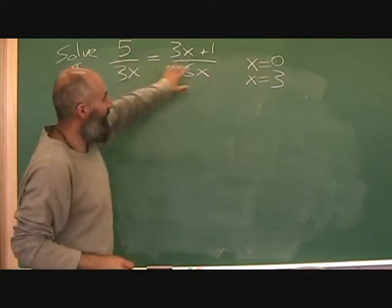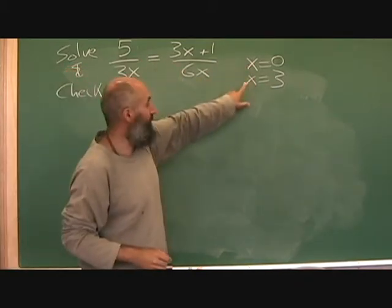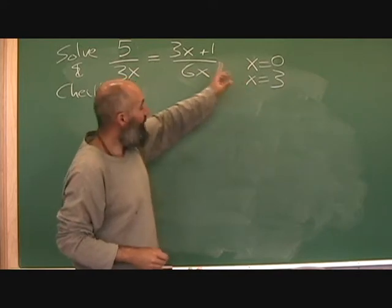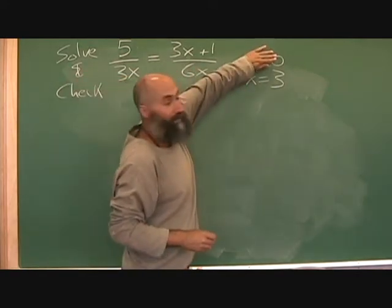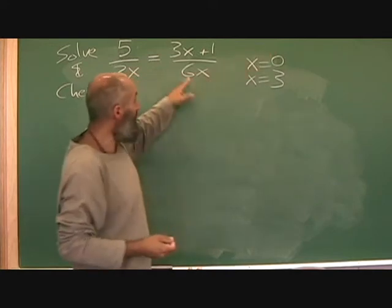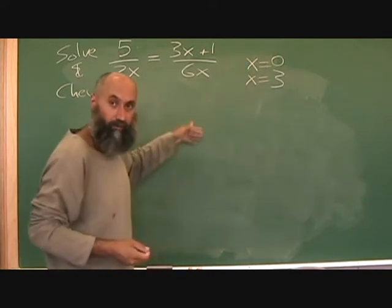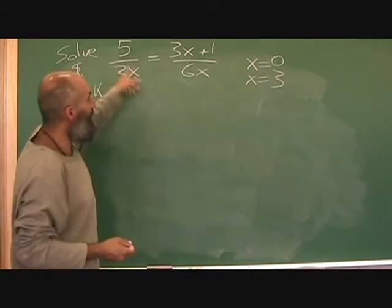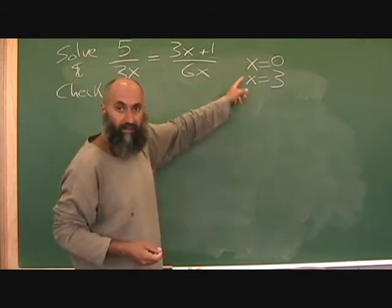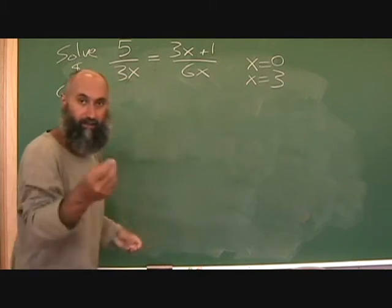Now we've already solved it and we've got a solution of x is equal to zero and x is equal to three. If we didn't write our restrictions and eliminate this because of our restrictions, the problem with zero will come up when we're doing a check. So solving part is straightforward, we already figured out it was x equals zero and x equals three. Let's do a check on this.